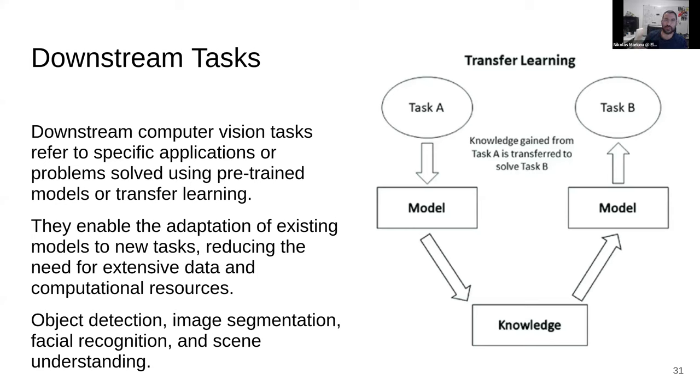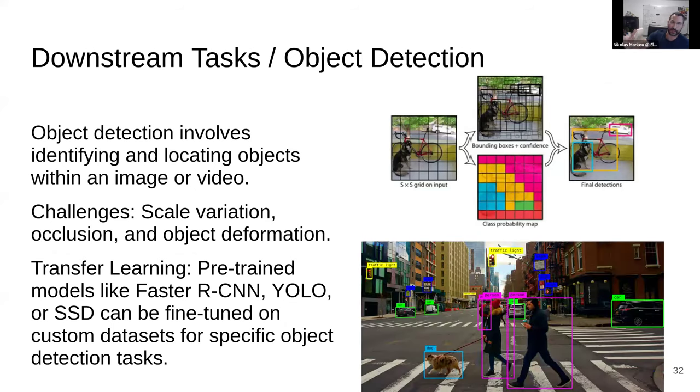So we had object detection, image segmentation, facial recognition, scene understanding. Let's see object detection. Object detection started with I think it was the COCO dataset from Microsoft, and then you had heads that are attached to pre-trained models.